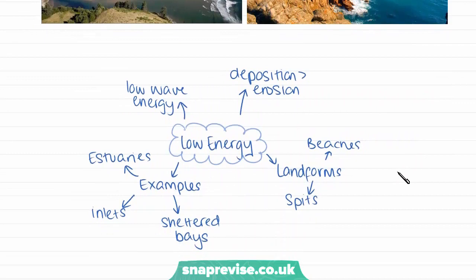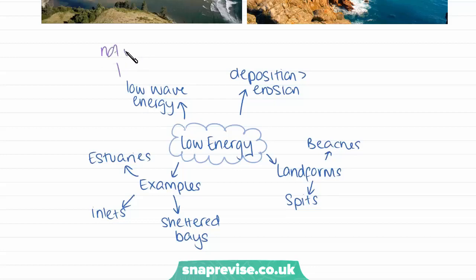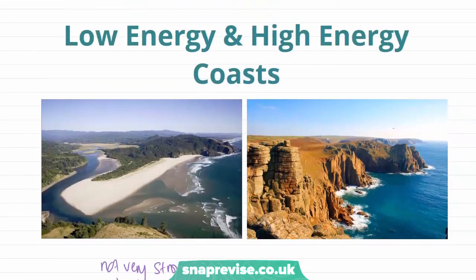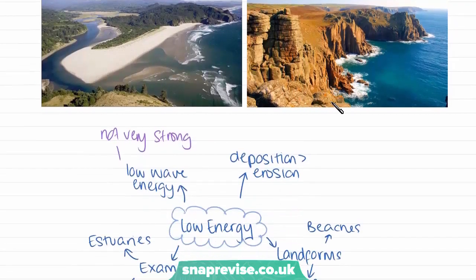Low energy coasts have very low energy acting upon them, in the form of low wave energy, meaning the waves are not very strong. Because of this low wave energy, deposition is greater than the rate of erosion, and that is why we get all of this sand build up, as you can see in this photograph here.